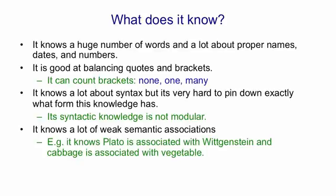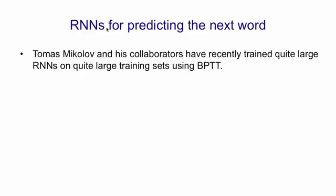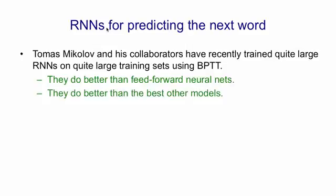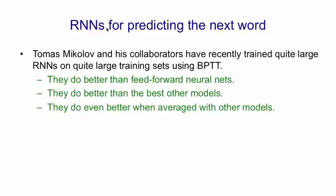Recently, Thomas Mikolov and his collaborators have been training large recurrent neural networks to predict the next word in large datasets. They use the same technique as the feedforward neural nets that first convert a word to a real valued feature vector and then use those feature vectors as input to the rest of the network. They do better than the feedforward neural nets. They also do better than the best other models. And when you average them with the best other models, they do better still. So that's the best language models there are currently.